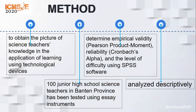Method. The purpose of this research is to obtain a picture of scientific knowledge in the application of learning using technological devices. This quantitative research applies a descriptive analytic method on data in the form of test results. It reveals the results of the test from 100 junior high school science teachers in Banten Province who voluntarily participated. The test scores were statistically tested to determine empirical validity, reliability, and level of difficulty using SPSS-20 software. Scores that met the validity criteria were then analyzed descriptively.